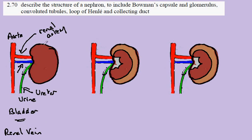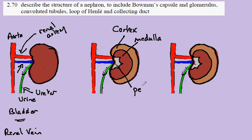If we slice through the kidney to show the internal structure, we see different coloured regions. The outer, lighter coloured region is known as the cortex. Then we have a slightly darker inner region called the medulla. And then there is a lighter coloured space known as the pelvic region — not to be confused with the pelvis of the skeletal system. This is where the urine collects and drains down the ureter.